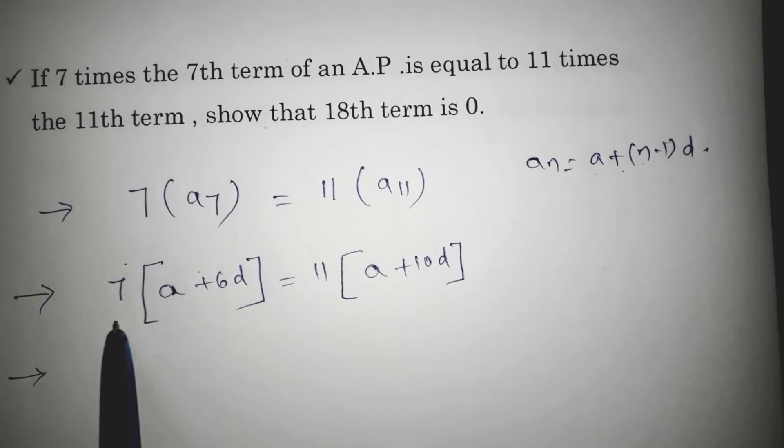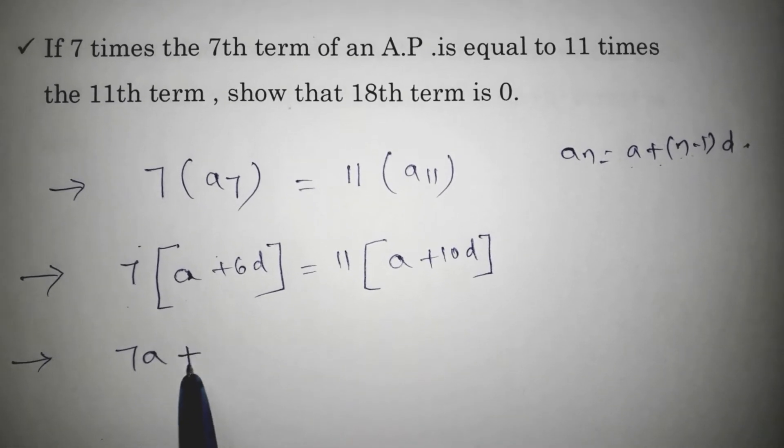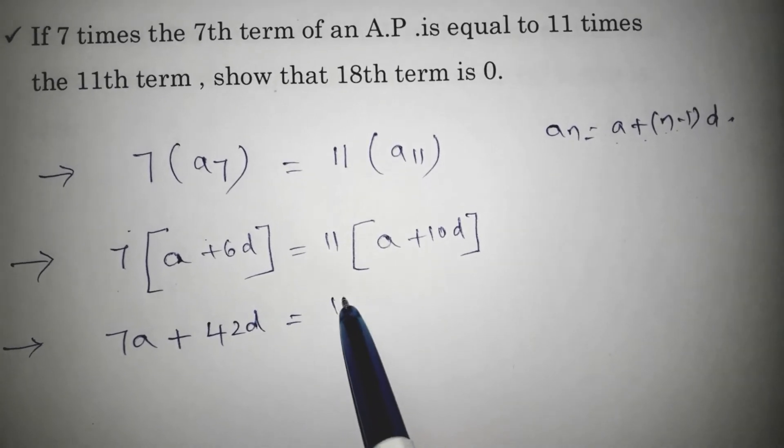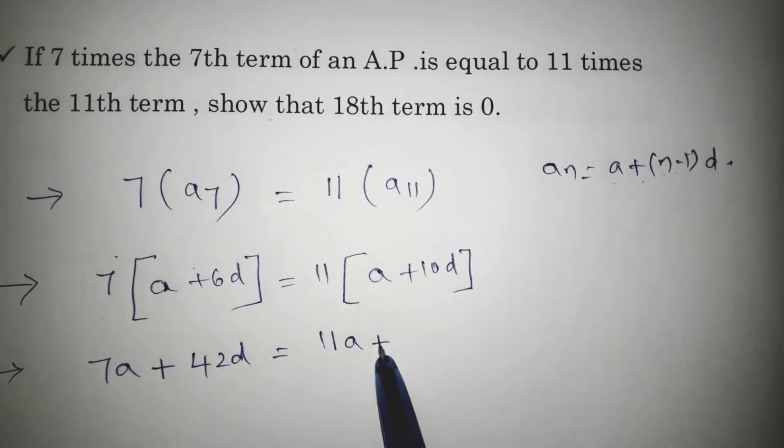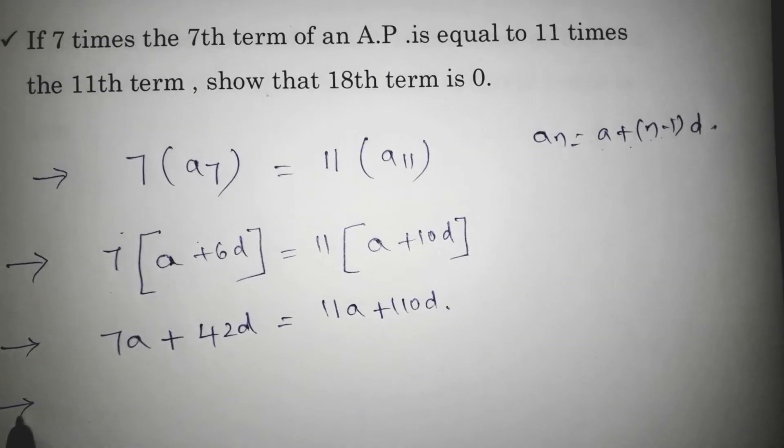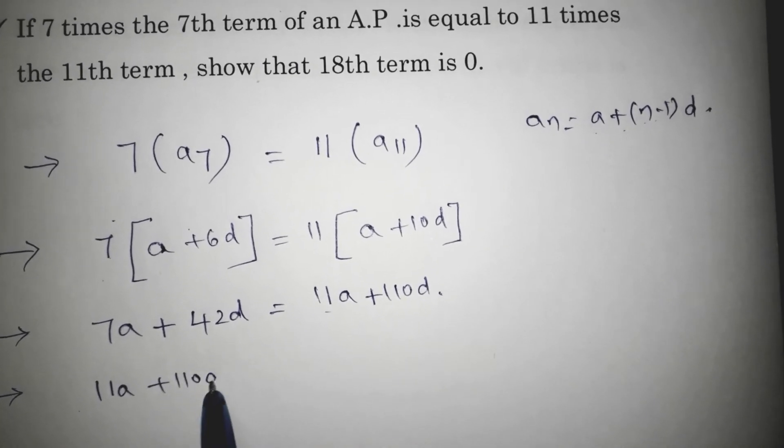Now, if we multiply, it will be 7a plus 7 times 6 is 42d. 11 times a, 11a plus 11 into 10, 110d. So, first write these terms like 11a plus 110d.